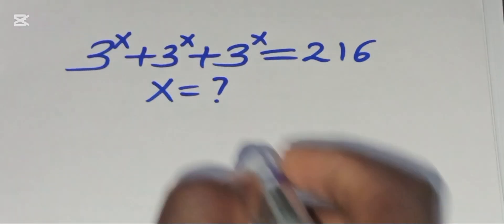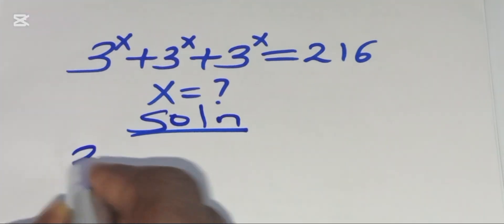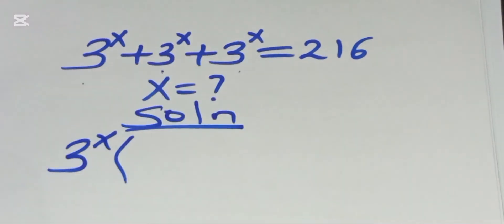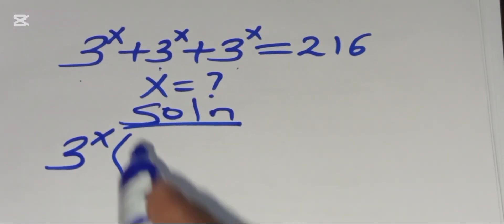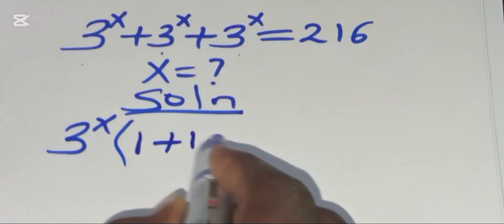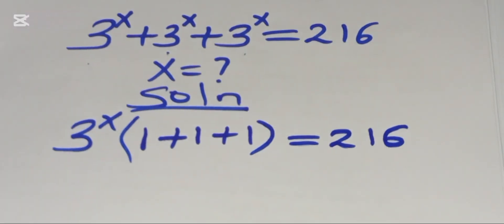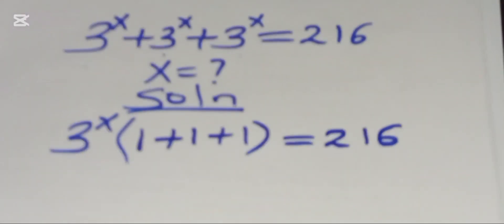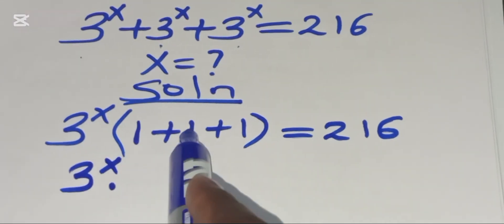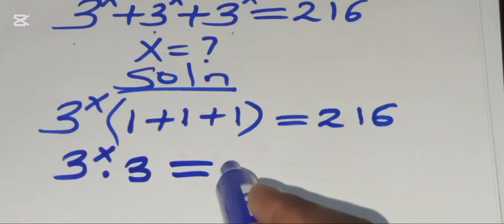Now the solution. We have that 3 raised to the power x is common — we have 3 raised to the power x, 3 raised to the power x, and 3 raised to the power x. So this is the same thing as 3 raised to the power x factored out, then we have 1 plus 1 plus 1, which is equal to 216. So this is 3 raised to the power x multiplied by 3, which equals 216.